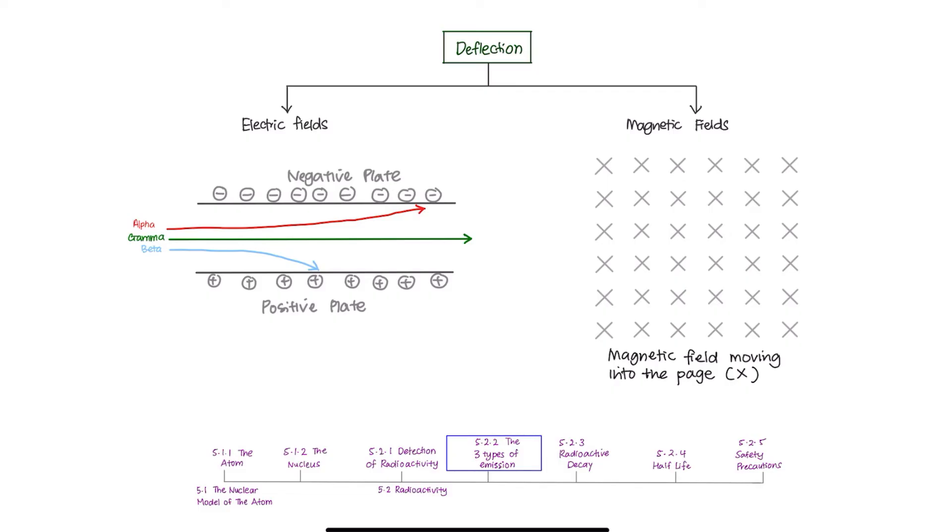As for magnetic fields, it's a little bit more complicated. The direction is worked out using the Fleming left-hand rule, which I will be explaining this in more detail on a separate video. You can watch it to understand how Fleming left-hand rule applies for magnetic field. But as a brief explanation here, you have to know that in a magnetic field, alpha and beta are deflected in opposite directions like this and gamma rays are not changed.